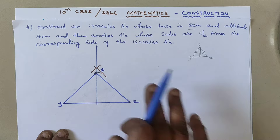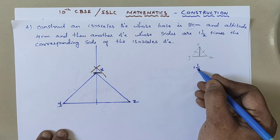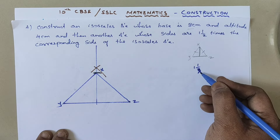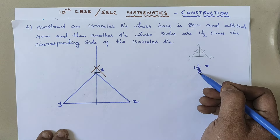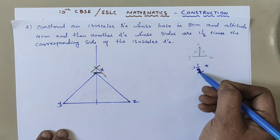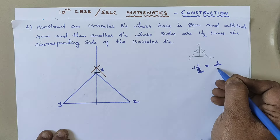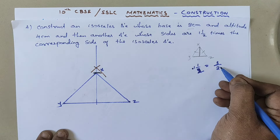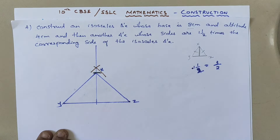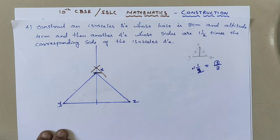Now for the second part: the second triangle should have sides 1½ times the corresponding sides. This is a mixed fraction, so convert it to an improper fraction: multiply 2 by 1, which gives 2, then add 1 to get 3. So 1½ equals 3/2. Since the numerator 3 is bigger than 2, the second triangle will be bigger and will come outside the first triangle.